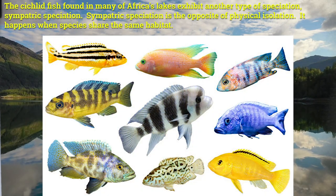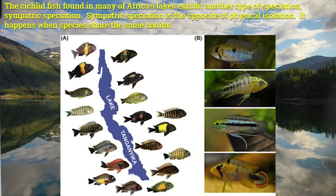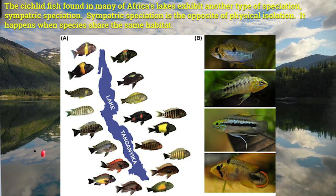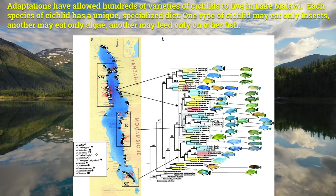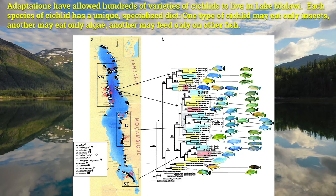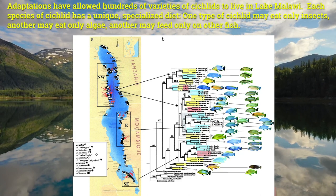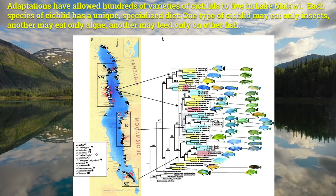The cichlid fish found in many of Africa's lakes exhibits another type of speciation: sympatric speciation. Sympatric speciation is the opposite of physical isolation — it happens when species share the same habitat. Adaptations have allowed hundreds of varieties of cichlids to live in Lake Malawi. Each species of cichlid has a unique, specialized diet. One type of cichlid may eat only insects, another may eat only algae, and another may feed only on other fish.